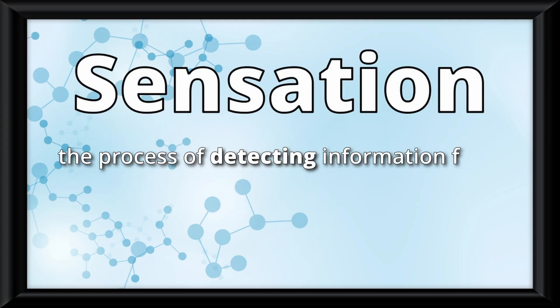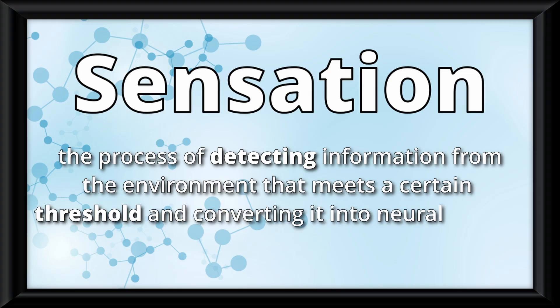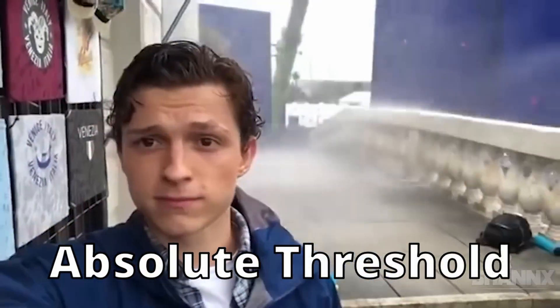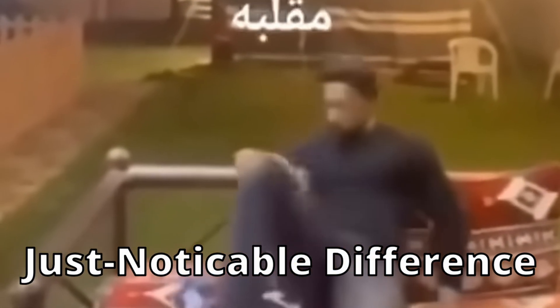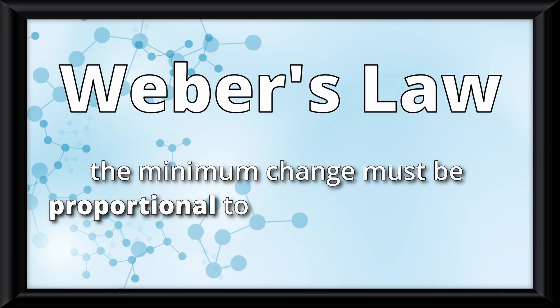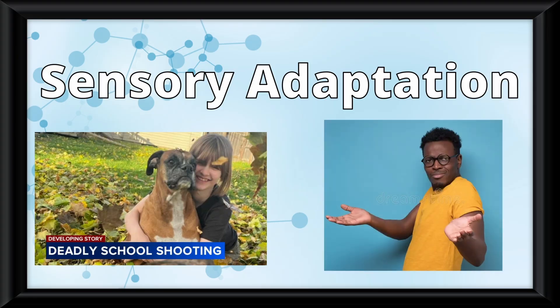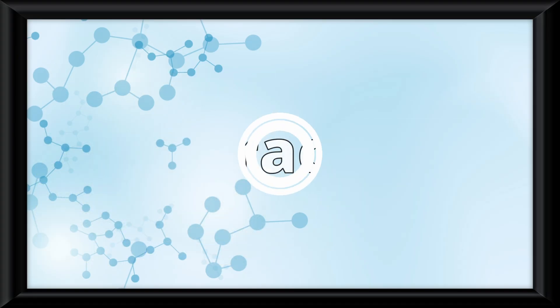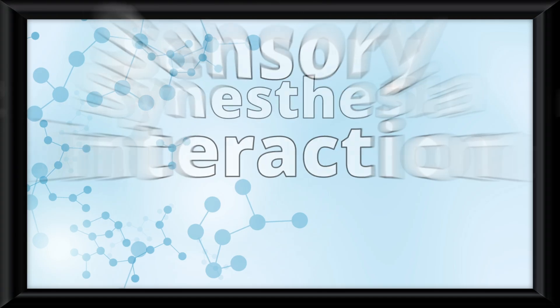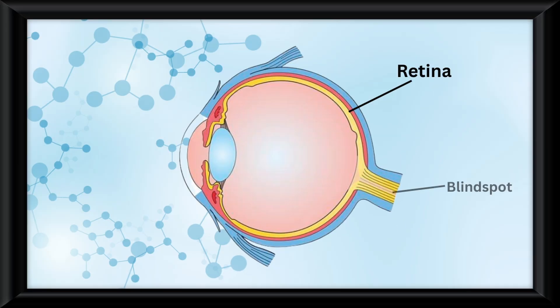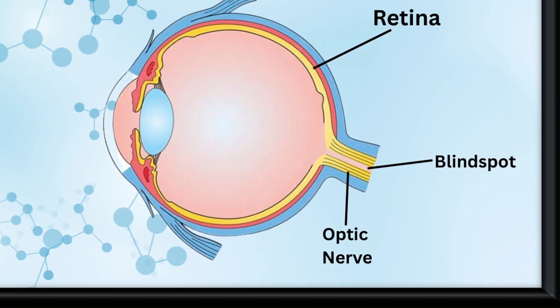Sensation is the process of detecting information from the environment that meets a certain threshold and converting it into neural signals for the brain to process as perception. The absolute threshold is the point where a stimulus can be detected at least 50% of the time. The just noticeable difference is the minimum change needed to notice a difference, and Weber's law states that this change must be proportional to the original stimulus. Sensory adaptation happens when we become less sensitive to constant, unchanging stimuli. Sensory systems also interact — known as sensory interaction — and sometimes mix in unusual ways, like synesthesia, where one sense is experienced through another. For vision, the retina is the photosensitive surface at the back of the eye where light is converted into neural messages. The blind spot occurs where the optic nerve exits, but the brain fills in the missing information.